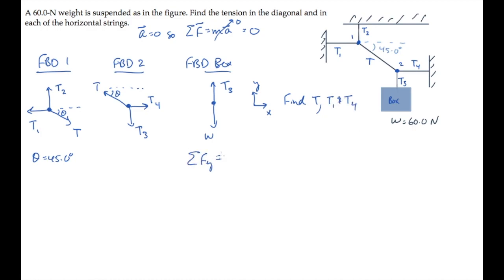Applying Newton's second law in the vertical direction to the box gives us T3 minus the weight, equaling zero. That tells us that tension T3 equals the weight, which we know is 60 Newtons. I'll record that value up here.